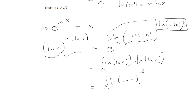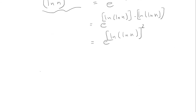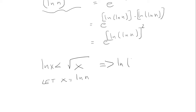We have to take advantage of the hint. We know that ln of x is less than the square root of x. So if we let x equal ln of n, that means ln of ln of n is less than the square root of ln of n.